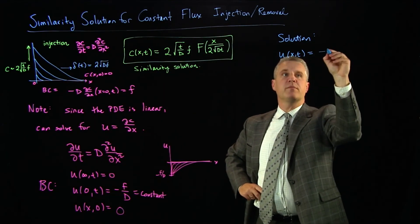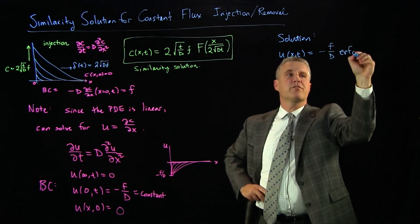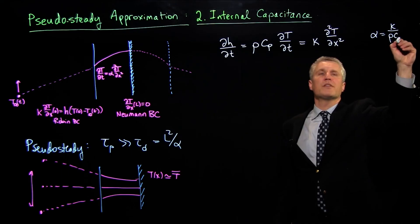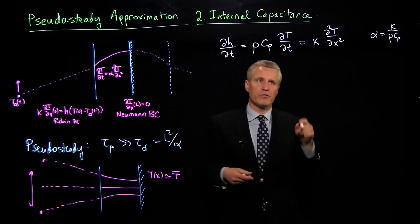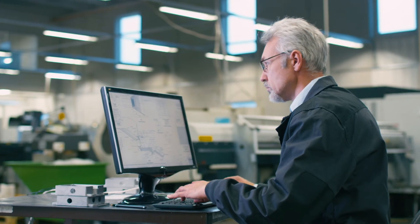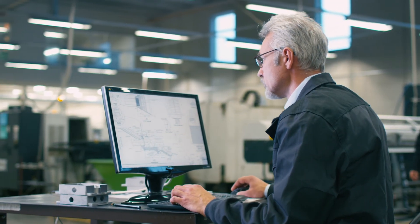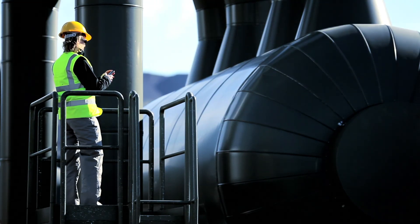In this course, you'll learn how to formulate continuum models of heat and mass transfer based on partial differential equations, and solve them the old-fashioned way — analytically, using only pencil and paper. Since many problems are too difficult to solve exactly, you will also learn the art of approximation: how to simplify a model enough to obtain an analytical solution while still capturing the key physics. Even in the age of computers, such solutions play a crucial role in the design of engineering systems and our understanding of their operating principles.